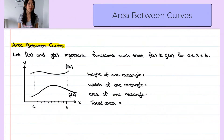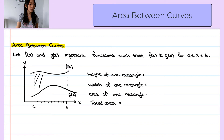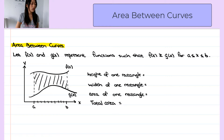Let f of x and g of x represent functions such that f of x is always greater than or equal to g of x over the interval a to b. We want to find the area between f of x and g of x over that interval, and we are going to use the Riemann sum — meaning we will split this area into smaller rectangles and sum those rectangles. To do that we are going to subdivide the interval a to b into smaller subintervals, and let's call the length of each subinterval delta x.